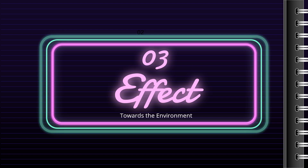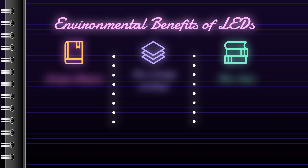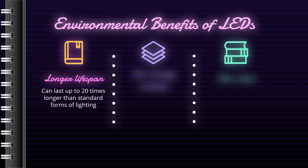Now we will talk about the effect of LED on the environment. One of the main reasons why LED light bulbs are considered eco-friendly is the fact that they are designed to last much longer than conventional light bulbs. LED light bulbs can last up to 20 times longer than standard forms of lighting such as incandescent or halogen bulbs, which has a very positive effect on the environment. The fact that LED last longer means fewer bulbs need to be produced and they do not need to be replaced as often. Less is more when it comes to helping the environment, so fewer lights needed means fewer resources required for manufacturing, packaging, and transportation.